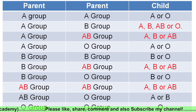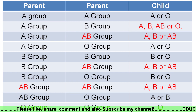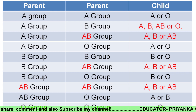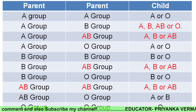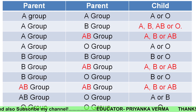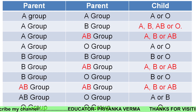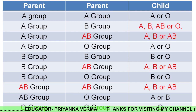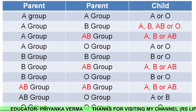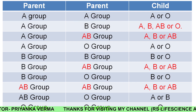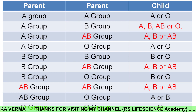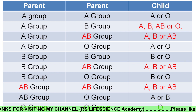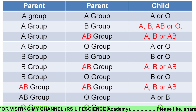If someone's blood group is O, then definitely their children will also have blood group O. This was a very beautiful concept. This is our co-dominance — the first law of co-dominance. So it is crystal clear. Thank you.